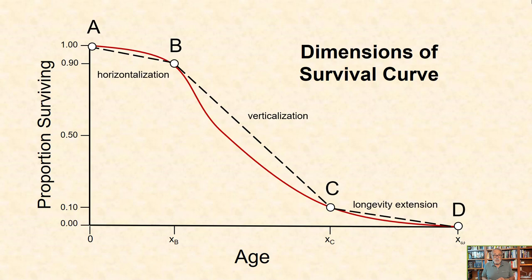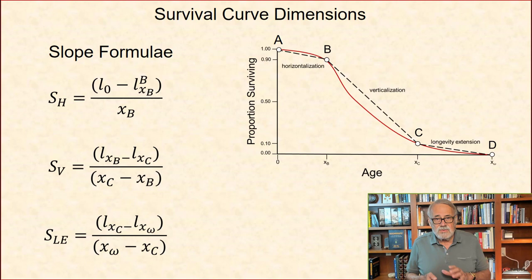including horizontalization, that is the slope between age 0 and Lx equals 0.9, that is 10% dead. Second, verticalization, that is the survival slope between Lx equals 0.9 and Lx equals 0.1. And third, longevity extension, the survival slope between Lx equals 0.1 and the age of the last individual to die, that is when x equals omega.